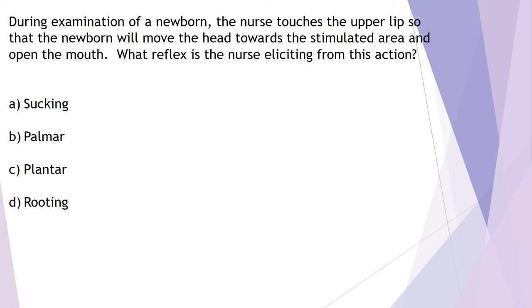Question five: during examination of a newborn, the nurse touches the upper lip so the newborn moves the head toward the stimulated area and opens the mouth. What reflex is the nurse eliciting? Options: A) sucking, B) palmar, C) plantar, or D) rooting. Remember, rooting is when they turn their mouth toward the stimulation to latch on — looking for a breast. That is a positive rooting reflex. Answer is D.